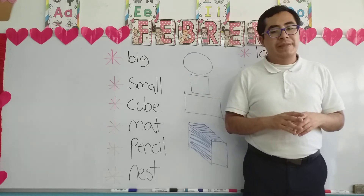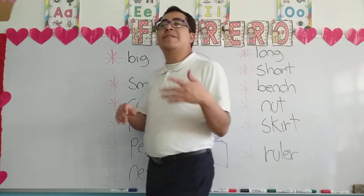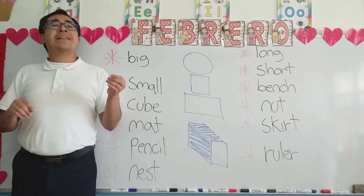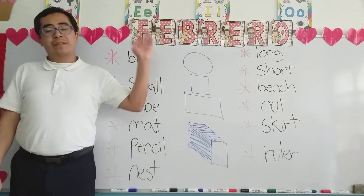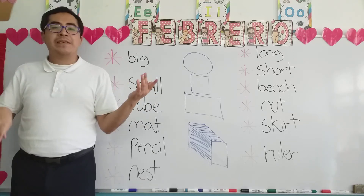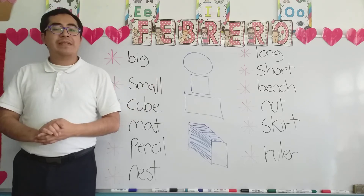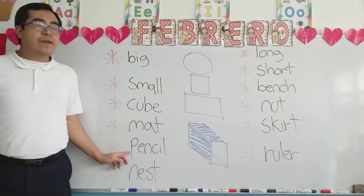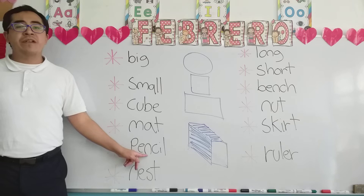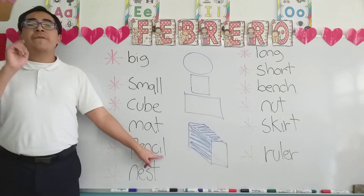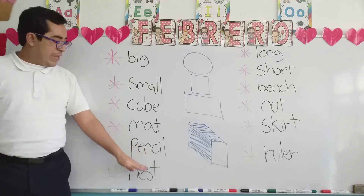Under 'mat' we have 'pencil.' Of all the words today, pencil is very easy. Remember, pencil is a school object that we use to draw and write our activities. Recuerden que pencil es de las más fáciles — pencil in Spanish: lápiz — y es un objeto escolar que utilizamos para dibujar o escribir nuestras actividades. Letters for 'pencil': P of Pedro, E of Enrique, N of Nurse, C of Camila, I of Indian, L of Lemon — together they form the word 'pencil.'